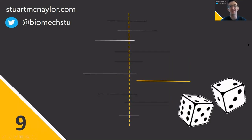Mistake nine is failing to correct for the fact that multiple comparisons were performed within the study. When we have a large number of variables or statistical tests, we know that even if the null hypothesis is true, a small number of those tests will achieve significant results simply by chance. And so that's why there's a need for a correction to be performed.